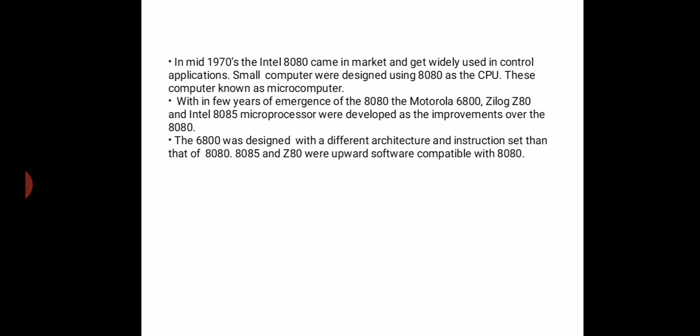In the mid-1970s, the Intel 8080 came to the market and was widely used in control applications. Control applications means controlling other functions or machines — for example, in industry where many machines are controlled by giving commands, like a washing machine. This concept came in 1970. Later, they used this microprocessor to build a computer, which was called the microcomputer.